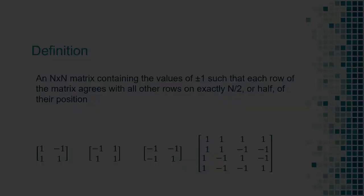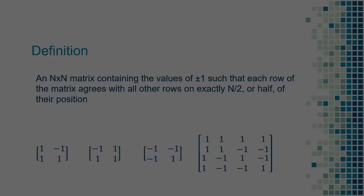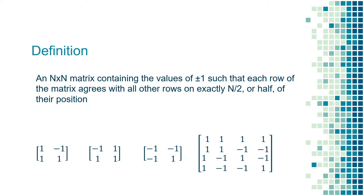Alright, now we can talk about Hadamard matrices. So, Hadamard matrices are any n-by-n matrix that contain the values plus or minus 1 such that each row of the matrix agrees with all other rows on exactly n over 2, or half, of their positions. Reading this definition for the first time, you might be a little confused as to what it means, but we'll get some examples to clear it up.